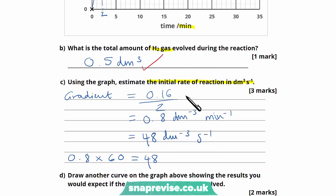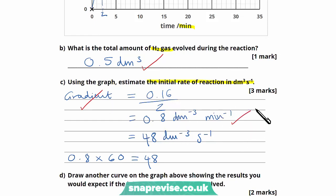For this question we receive the first mark for recognising we need to calculate the initial gradient and showing that line on our graph, the second for calculating the rate in dm³ per minute, and the third for correctly converting to dm³ per second.